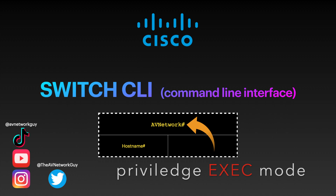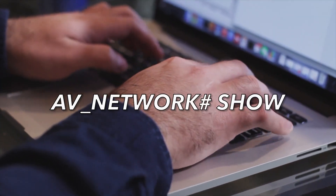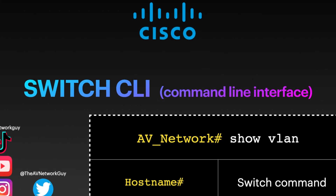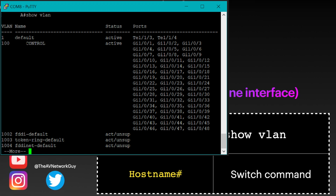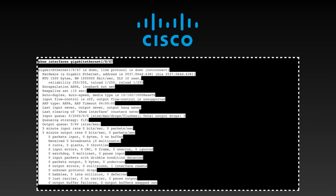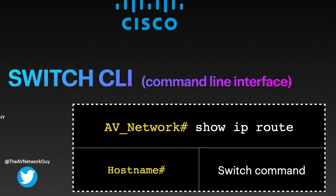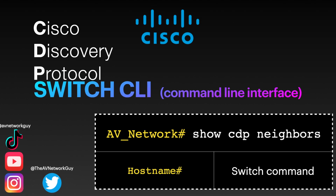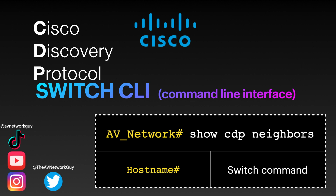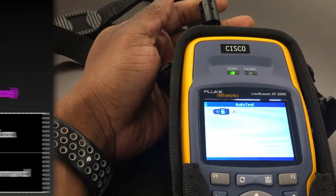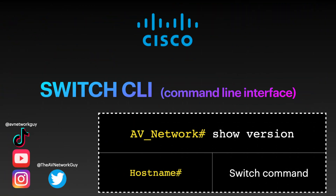Once you're in privilege mode, you will see a hashtag on the right side of the hostname. Today we'll focus on some show commands: 'show running-config', which displays the running configuration on the switch; 'show vlan', which displays the VLAN information; 'show interface' and the interface name, which displays information about a specific interface; 'show ip route', which displays routing table information; 'show cdp neighbors', which displays information about other devices connected via CDP — useful for troubleshooting connectivity issues; and 'show version', which displays the switch software version.